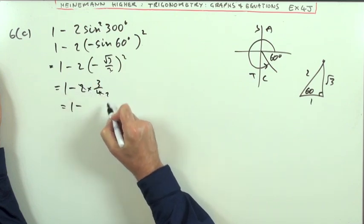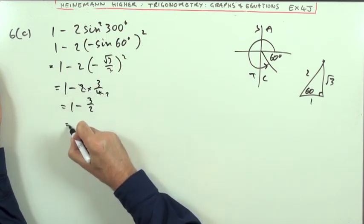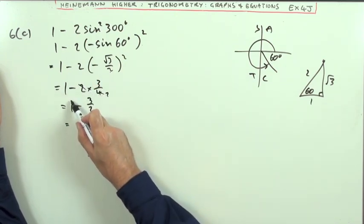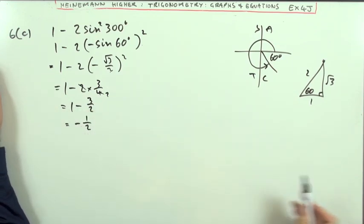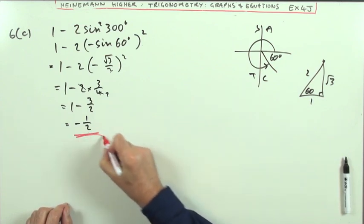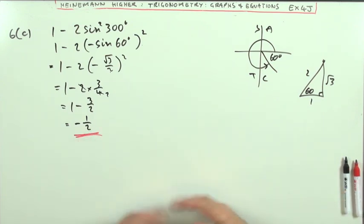The 2 and the 4 cancel to make it 2. 1 minus 3 upon 2. 1 is equivalent to 2 upon 2. So 2 take away 3, negative 1 upon 2. Answer to that, negative 1 half.